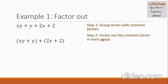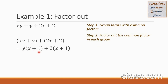In step 2, factor out the common factor in each group. In the first group, the variable y is common. So I factor out y — what remains inside is x plus 1. For checking, I multiply y by x to get back xy, and y times 1 is y. So these are the correct factors for the first group.